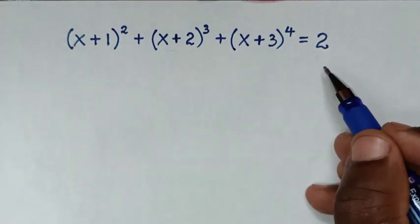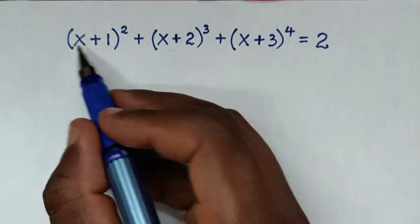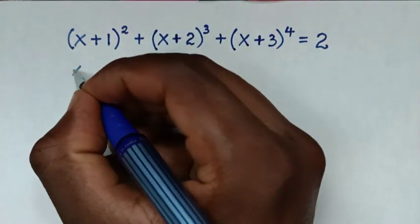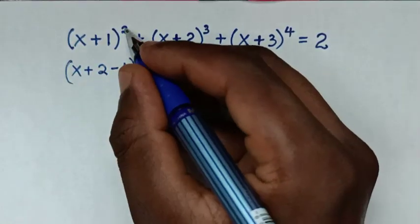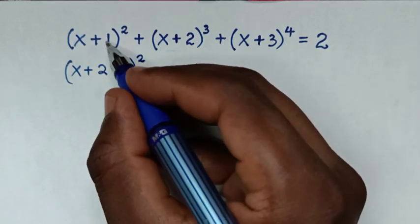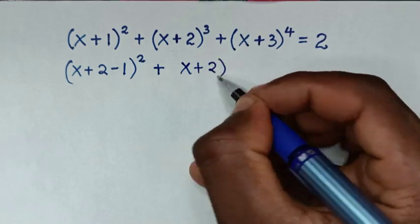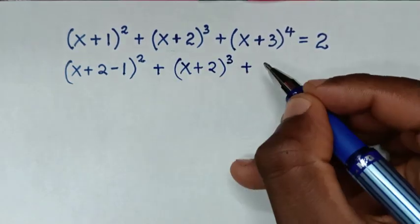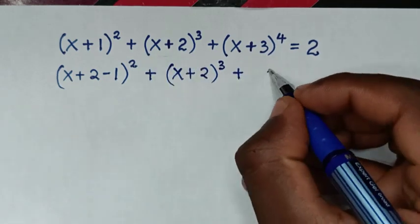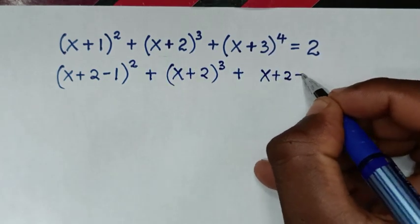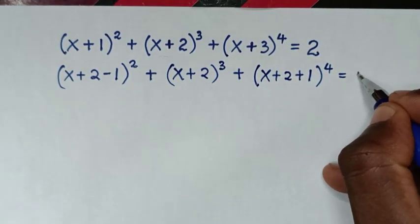In the first step we start by making (x+2) common. So x+1 is the same as (x+2) - 1, bracket power of 2. Then plus (x+2)³, then plus (x+3), which to make (x+2) common is the same as (x+2) + 1, bracket power of 4, is equal to 2.